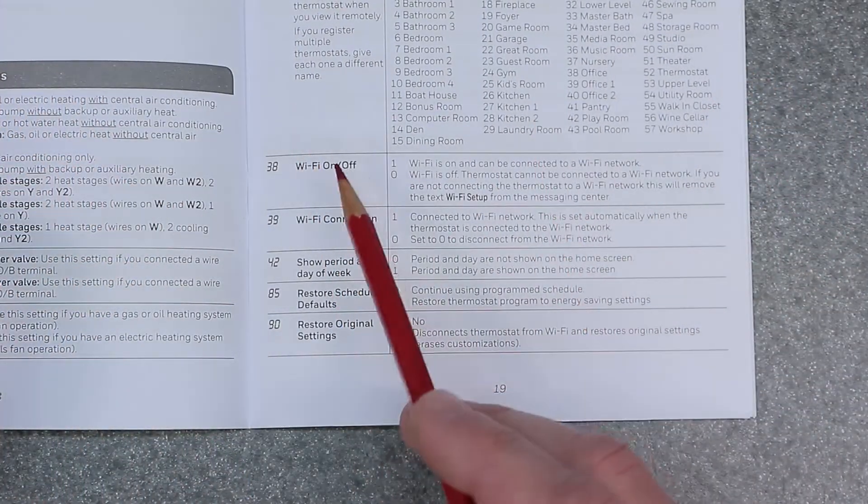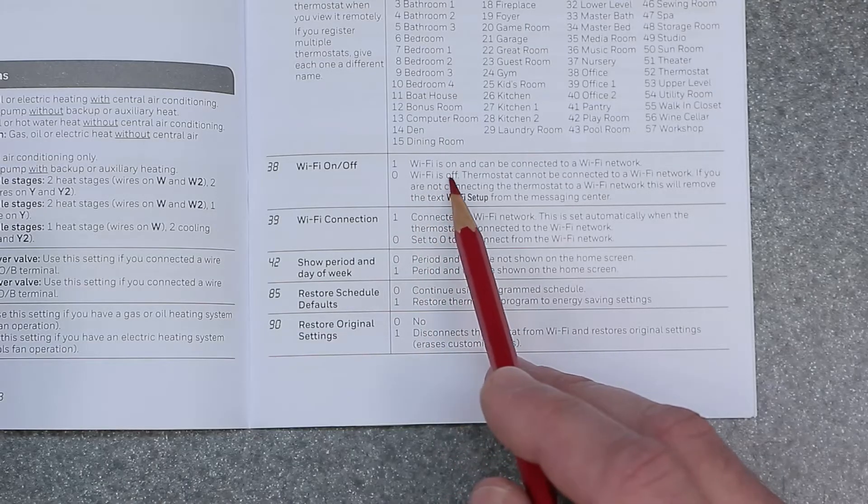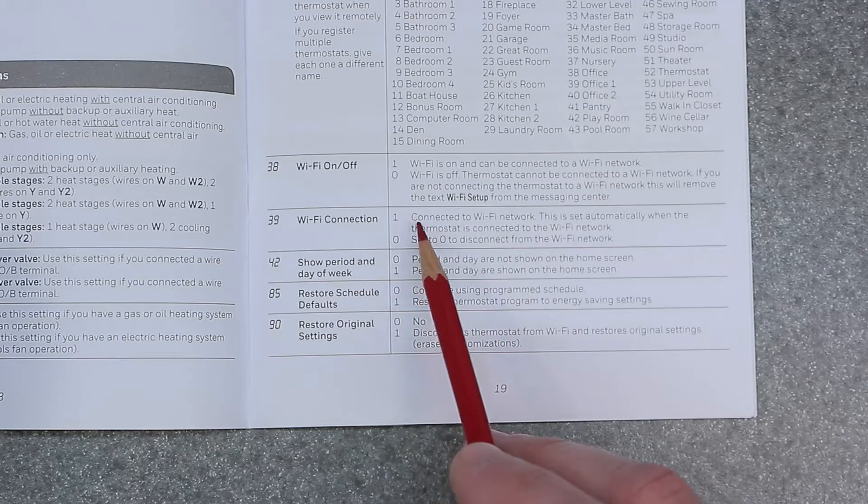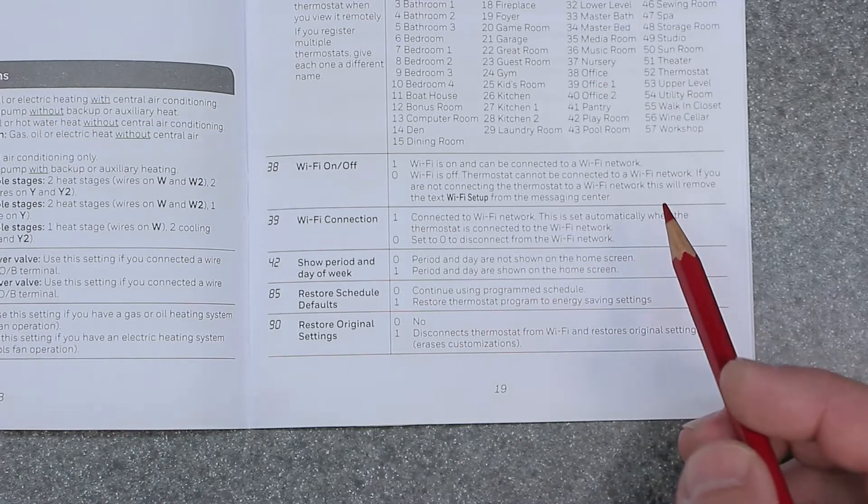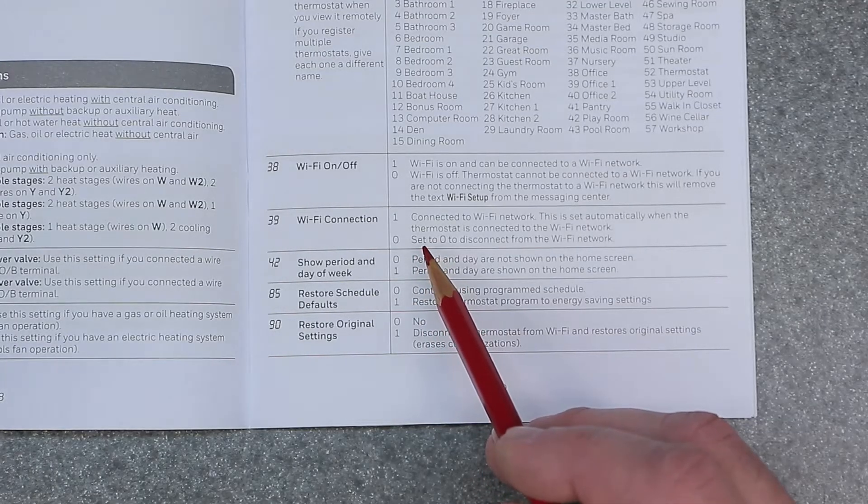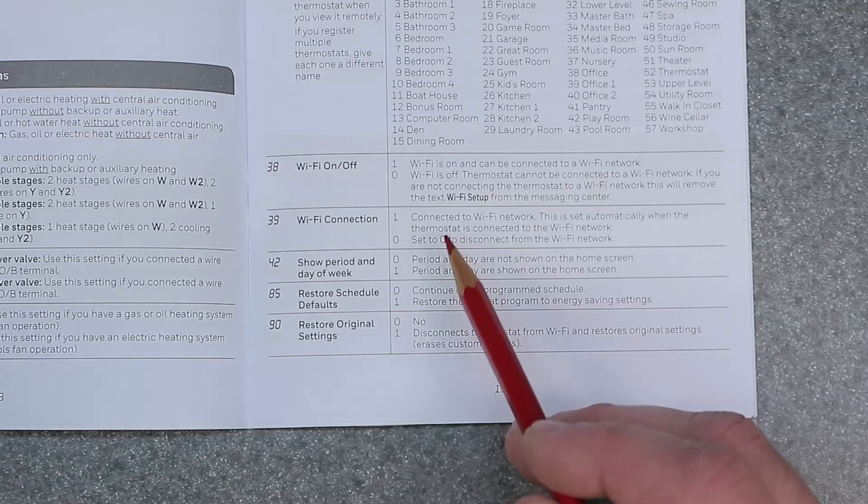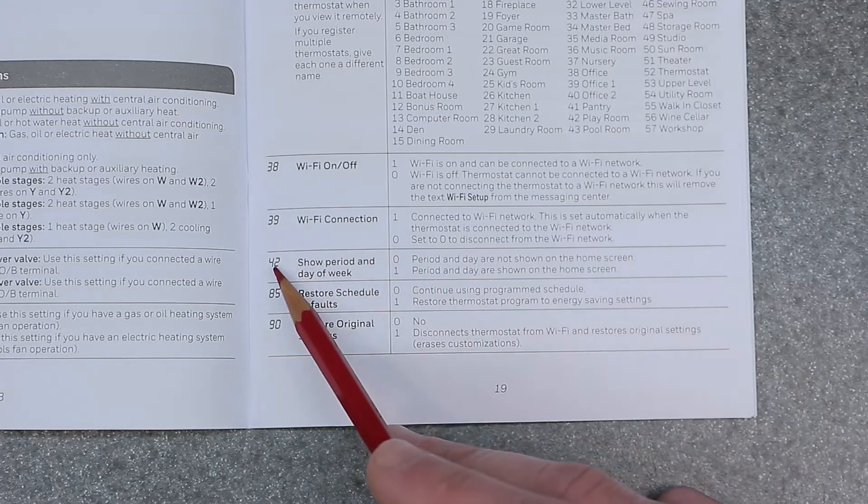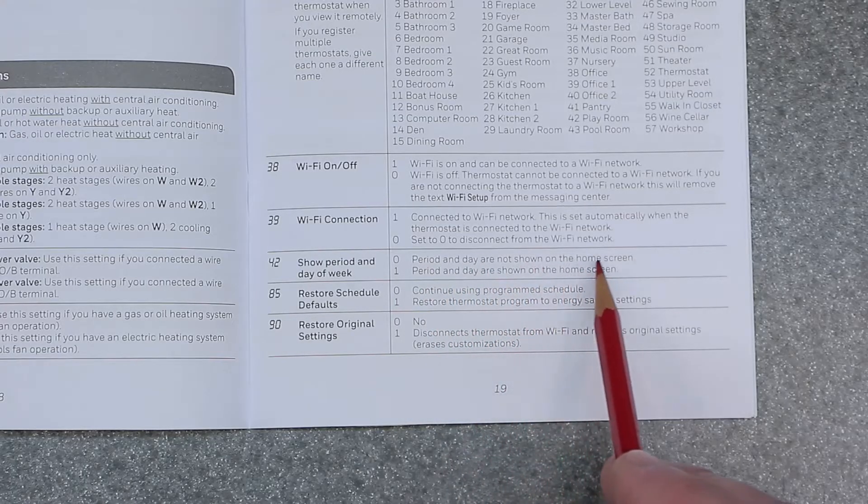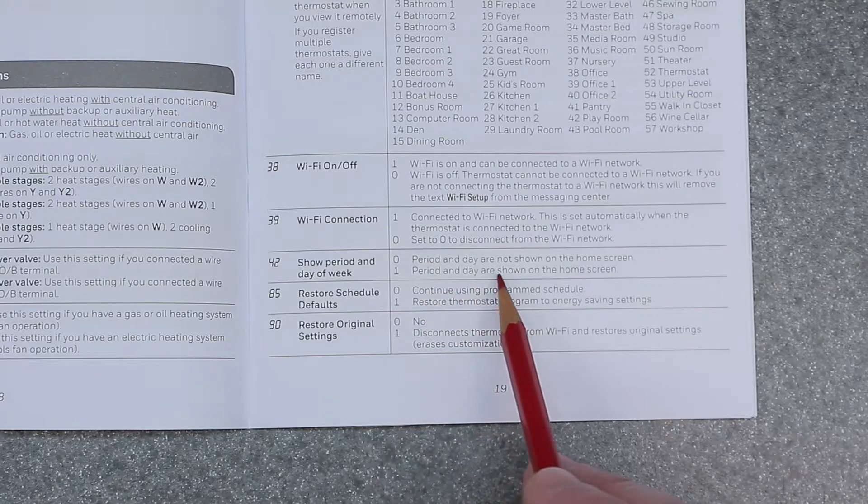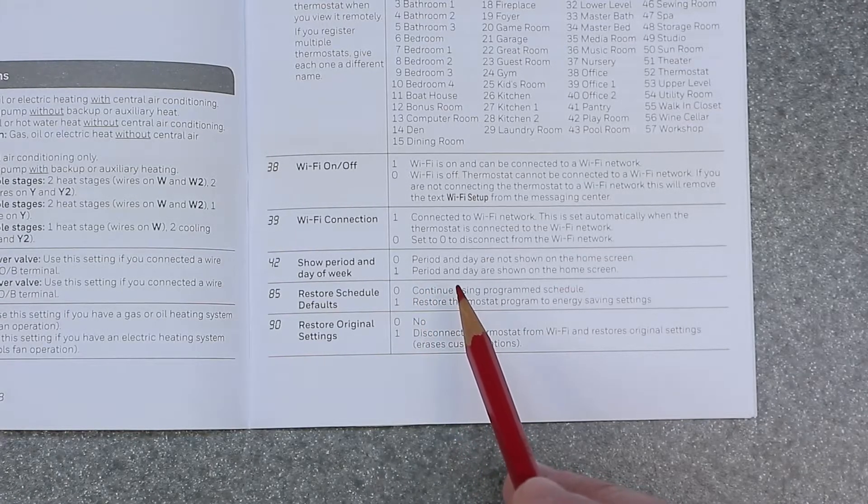Alright. So the last half of the menu is going to be 38, which is Wi-Fi on or off. Number one equals Wi-Fi is on and zero is Wi-Fi is off. 39 is Wi-Fi connection. One is connected to Wi-Fi network. Zero is going to be set to zero to disconnect from Wi-Fi network. So if you want to disconnect your Wi-Fi, go ahead and change the setting to zero because otherwise you will say connection failure or you will show the antenna with no signal. So that can be annoying. So if you're not going to use the Wi-Fi function, go ahead and change that to off, which is zero. Next is going to be 42, which shows period and day of week. Zero equals period and day of week are not shown on the home screen. One is equal to period and day are shown on home screen. So I would leave that on one because you want to see the period in the day on the home screen. It just makes sense. So leave that on one.